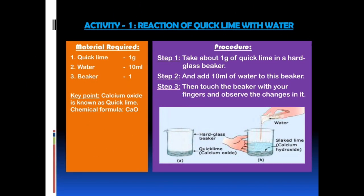Now we shall discuss Activity 1: Reaction of quicklime with water. Material required: 1 gram of quicklime, 10 ml of water, and 1 beaker. Key point: Calcium oxide is known as quicklime and its chemical formula is CaO. Procedure — Step 1: Take about 1 gram of quicklime in a borosilicate glass beaker. You can see the beaker in the picture. We have to take 1 gram of quicklime in this beaker.